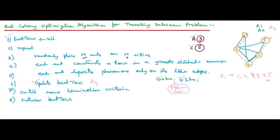If any other modification comes in any of the routes — maybe some extra ant comes — we go back and repeat these steps for several iterations to find the best tour. Once we find the best tour and no smaller distance can be obtained after a certain point, that is the termination criteria. We then return the best tour, and the ant colony optimization algorithm is complete.